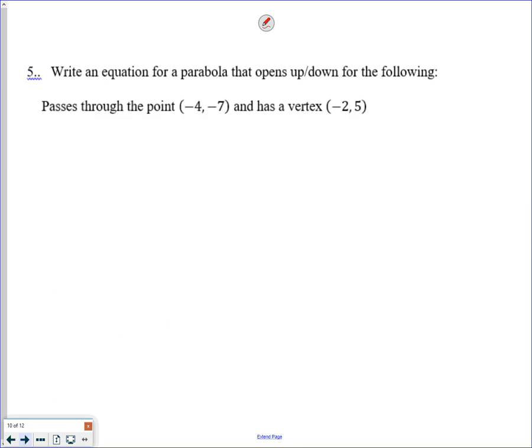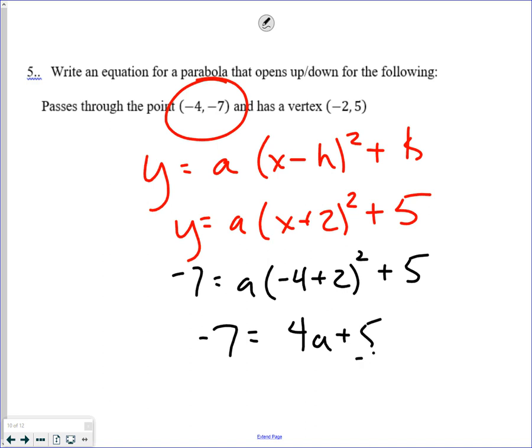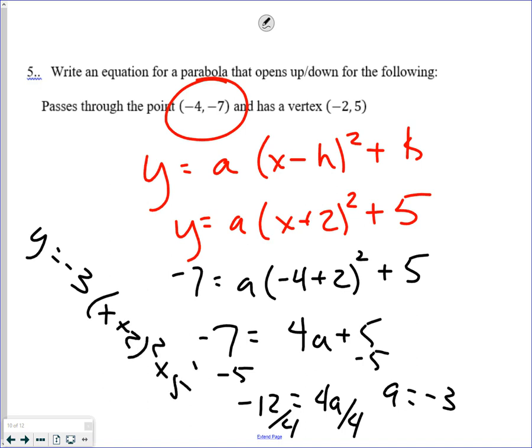Write an equation of the parabola given a vertex and a point. First, you have to understand vertex form. So, this would be k. So, y is equal to a, x plus 2, quantity squared, plus 5. Now, plug the point in. So, negative 7 for y, negative 4 for x. I get 4a plus 5. Subtract 5. I get an a value of negative 3. So, the answer to this question, I'm going to write it kind of going down sideways over here, is negative 3, x plus 2, squared, plus 5. So, this is the equation given that vertex and that point.